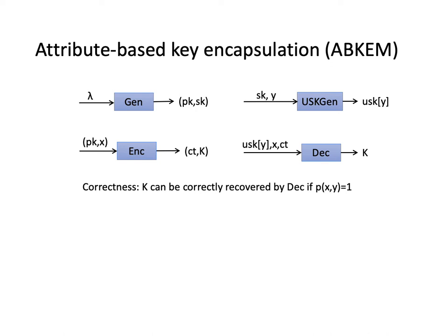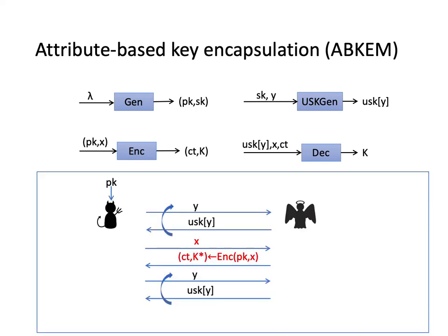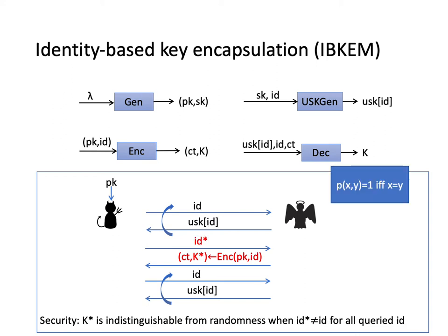This is the security game. The adversary takes as input the public key and makes many queries y to obtain user secret keys and also makes one query x to obtain the challenge ciphertext and also the corresponding session key k*. Security holds if k* is indistinguishable from randomness when p(x,y) is not equal to 1 for all queried y. IBE is a special case of ABE where the predicate is restricted to be the equality predicate and can be easily converted into IBE.